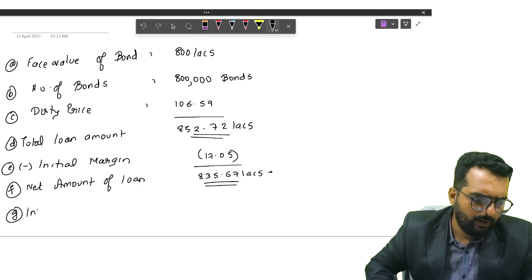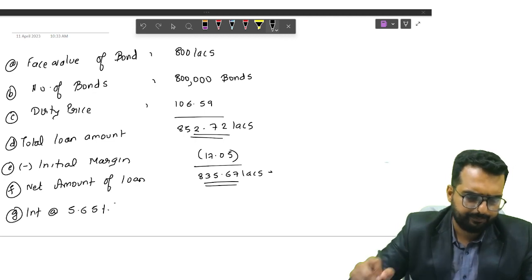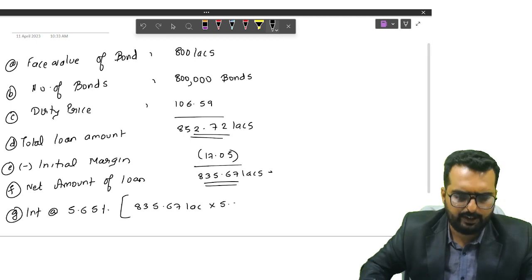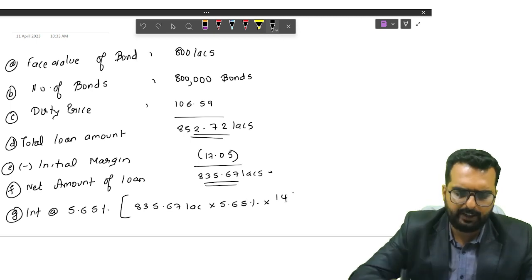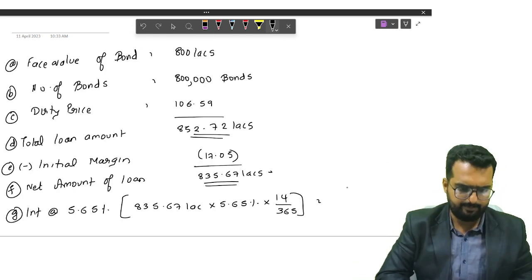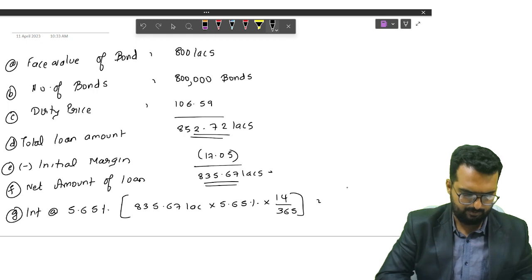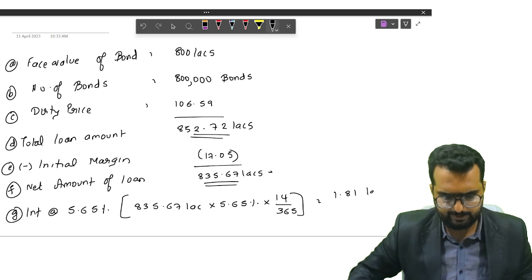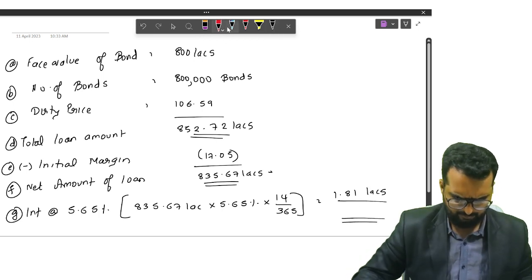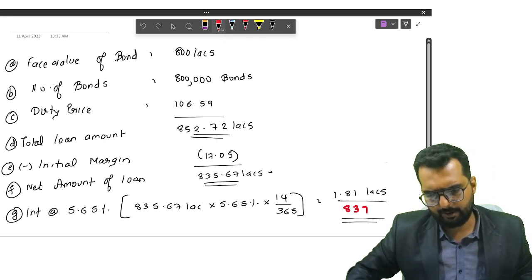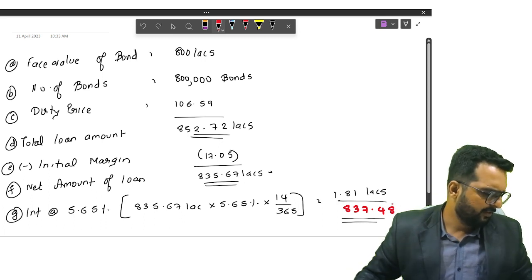On this loan, you will be paying interest at how much percentage? 5.65 percentage. So that will be 835.67 lakhs into 5.65 percent for how many days? 14 days. Divided by 365. Do I get the answer as 1.81 lakhs? Therefore, this plus 835.67, the closing amount will be 837.48.